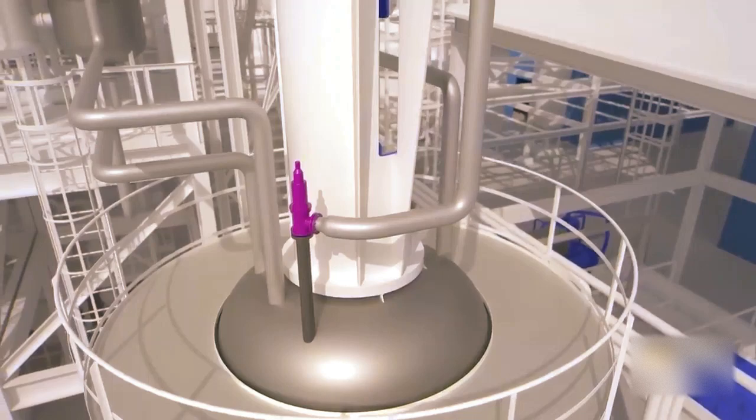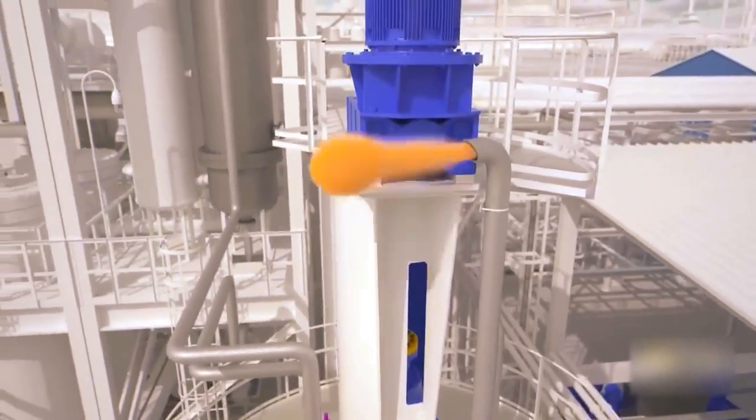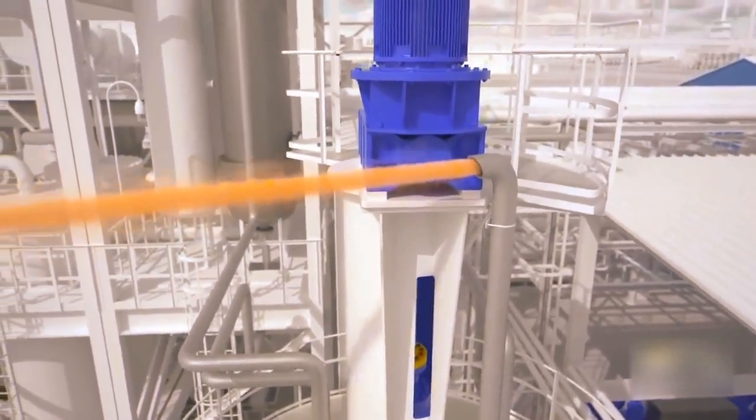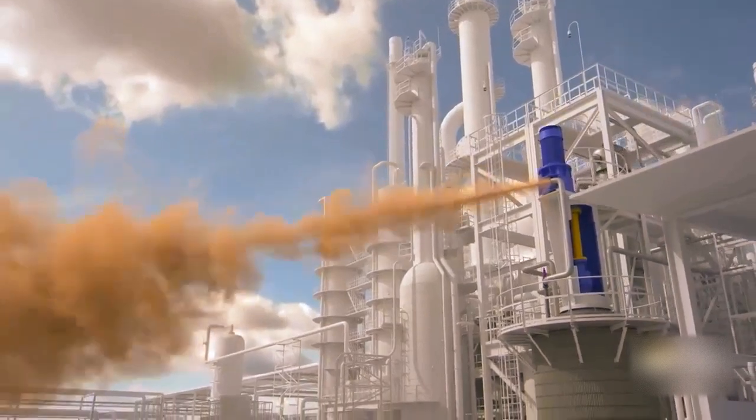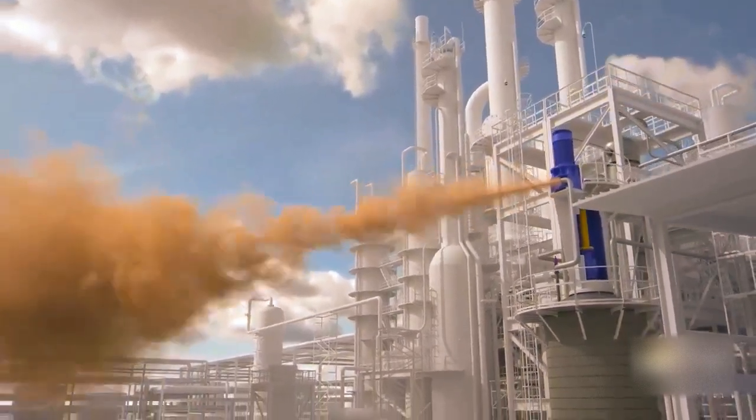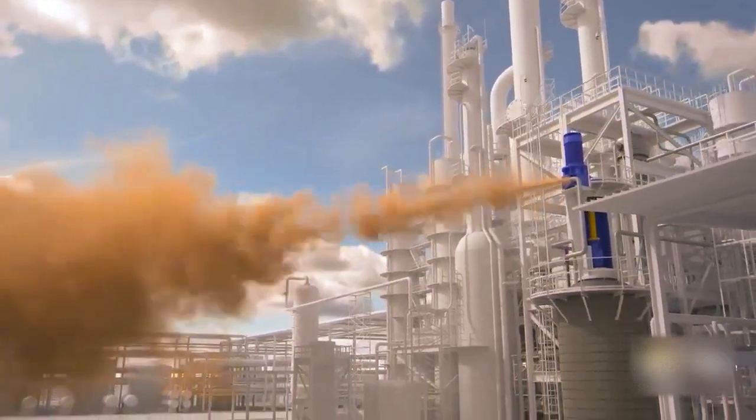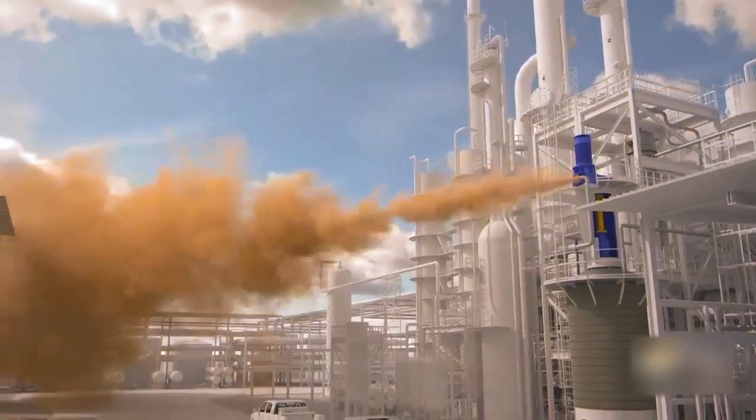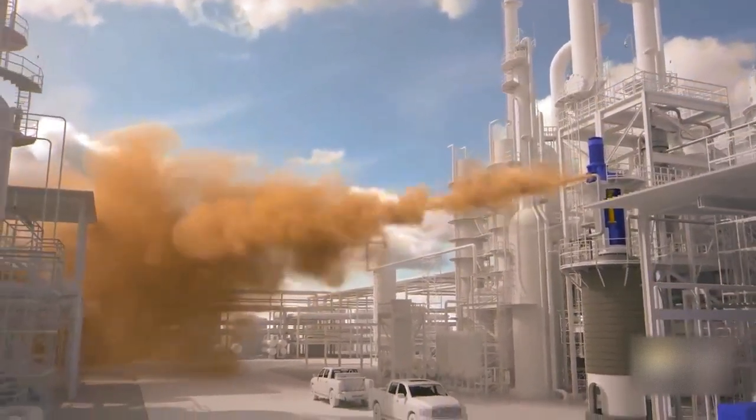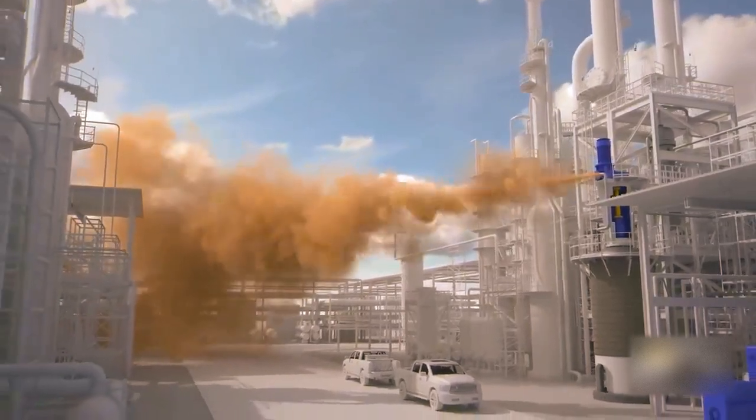Shortly before 10:30 a.m., the emergency pressure relief system activated. High-pressure ethylene vapor discharged from the reactor into the atmosphere. It was released horizontally toward an area where many people were working rather than vertically to a safe location.